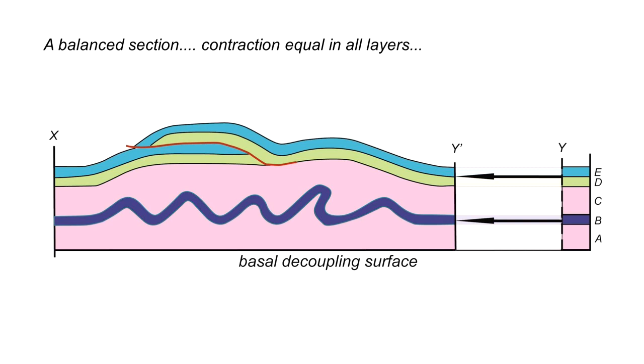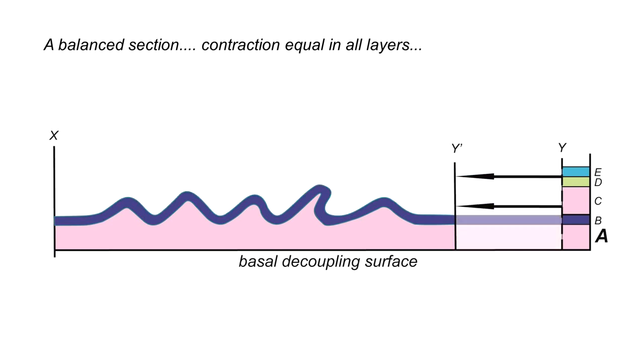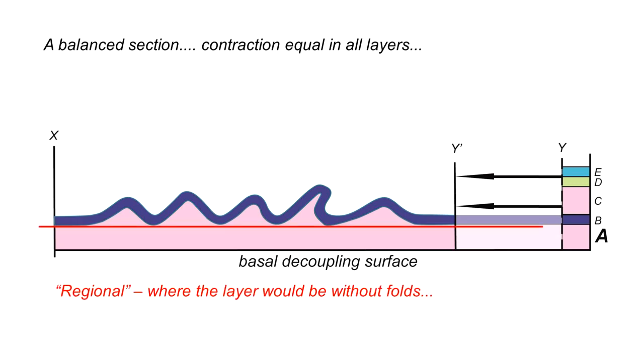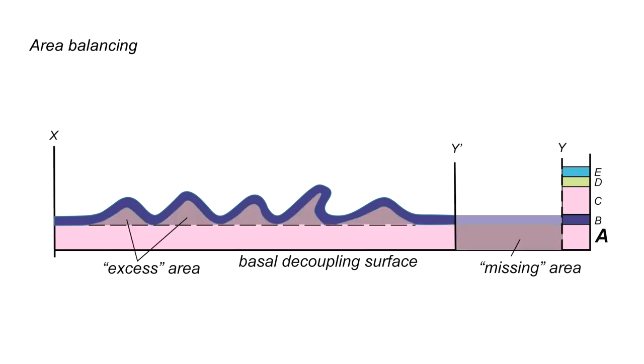Let's consider the lower part of this diagram where we have layer A and layer B. Layer B has deformed into this set of concentric fold structures. By that I mean the layer has retained thickness during folding. Let's now plot on the position of the interface between layers A and B before deformation. The regional is where the base of layer B would be without folding. Layer B, because it's been deformed by buckles, has moved exclusively upwards away from its regional. In doing so, we can recognize where unit A has come up above the regional defining a series of excess areas.